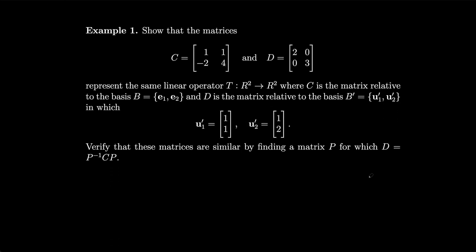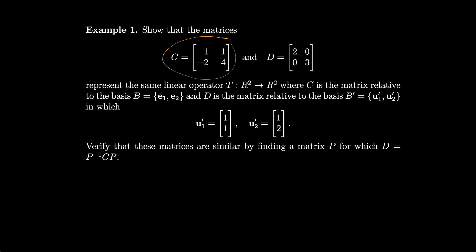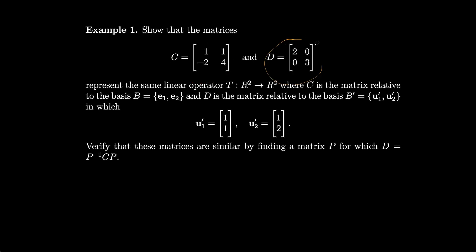Let's do an example. We'll show that matrices C and D represent the same linear operator, where C is the matrix relative to basis B, the standard basis E1, E2, and D is the matrix relative to basis B prime given by non-standard vectors. Notice that C and D look very different, but D is much easier to work with because it's diagonal — it tells you exactly what's going on, whereas C is more obscure. So sometimes having a more complicated basis gives you an easier representation of the same linear operator.